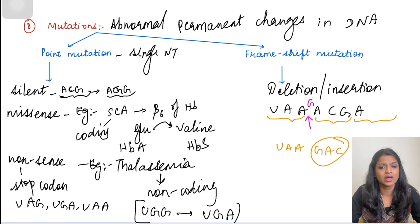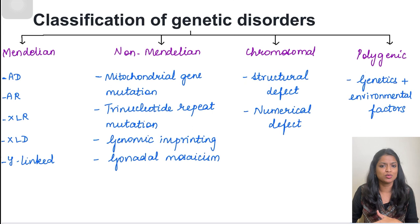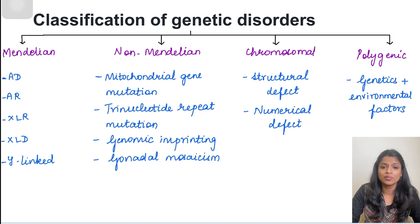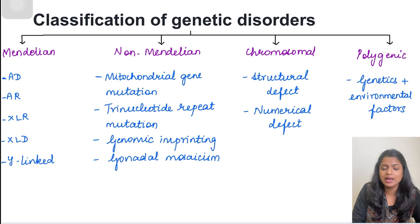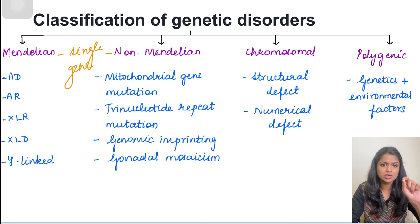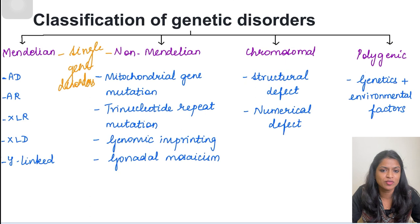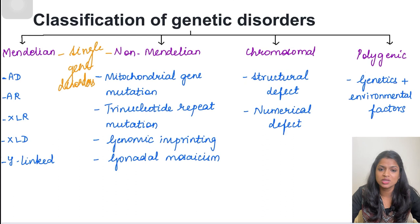Now for the classification of genetic diseases. We have Mendelian disorders, non-Mendelian disorders, chromosomal disorders, and polygenic inheritance. Mendelian disorders follow Mendelian laws of inheritance and include autosomal dominant, autosomal recessive, X-linked recessive, X-linked dominant, and Y-linked inheritance. Non-Mendelian disorders are also single gene disorders but do not follow classical Mendelian inheritance — examples include trinucleotide repeat mutations, mitochondrial inheritance, genomic imprinting, and gonadal mosaicism.